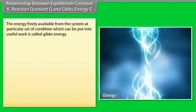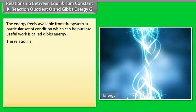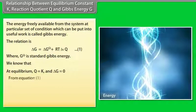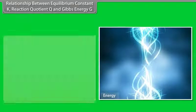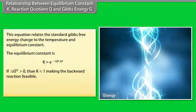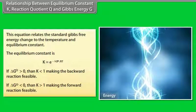Relationship between equilibrium constant K, reaction quotient Q, and Gibbs energy G: The energy freely available from the system at a particular set of conditions that can be put into useful work is called Gibbs energy. At equilibrium, Q = K and ΔG = 0, giving: ΔG° = −RT ln K. This relates standard Gibbs free energy change to temperature and equilibrium constant. If ΔG° > 0, then K < 1, making the backward reaction feasible. If ΔG° < 0, then K > 1, making the forward reaction feasible.